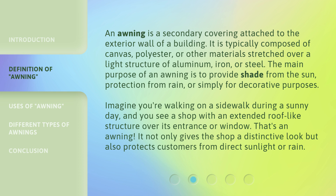The main purpose of an awning is to provide shade from the sun, protection from rain, or simply for decorative purposes. Imagine you're walking on a sidewalk during a sunny day and you see a shop with an extended roof-like structure over its entrance or window — that's an awning. It not only gives the shop a distinctive look but also protects customers from direct sunlight or rain.